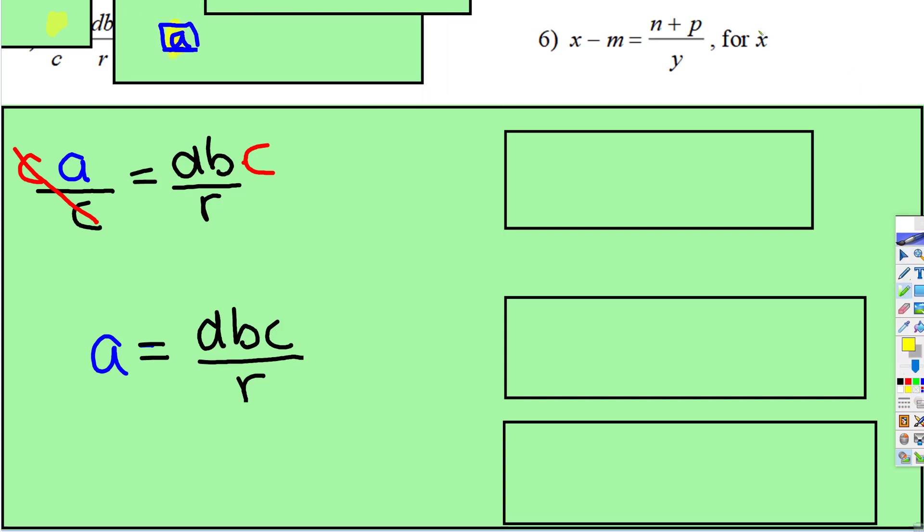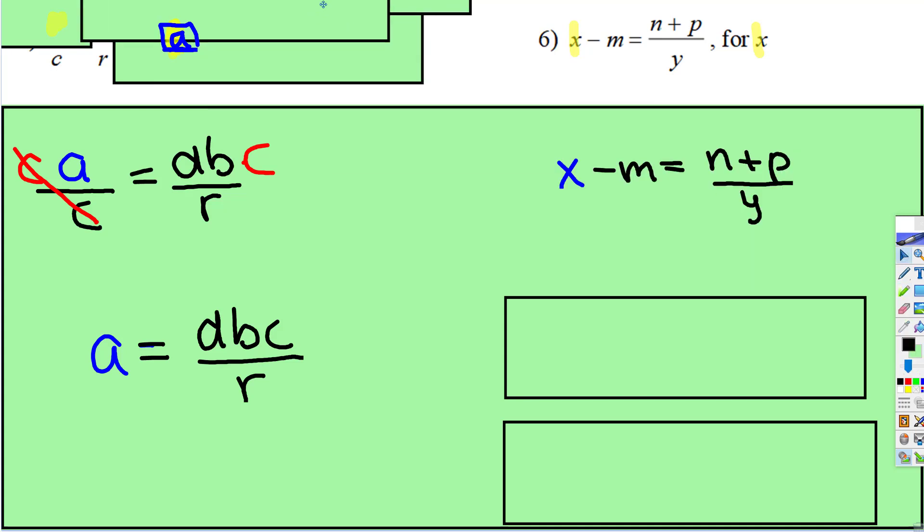So this time, we need to get x by itself. Well, this one looks pretty easy. It looks like all we're going to do is add the m. When you add the m to this side, you do not add the m to the fraction. You add the m to the outside of the fraction.